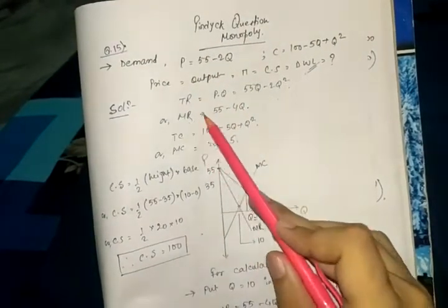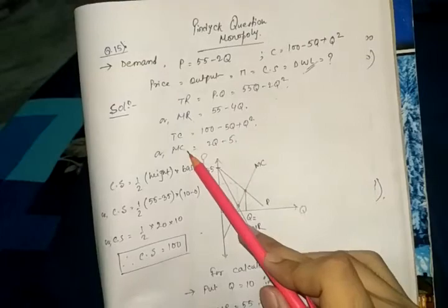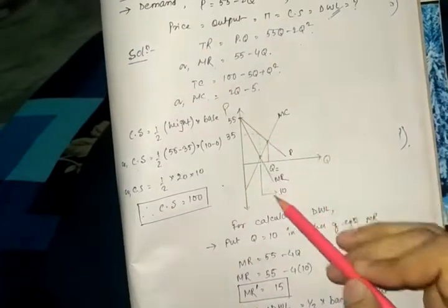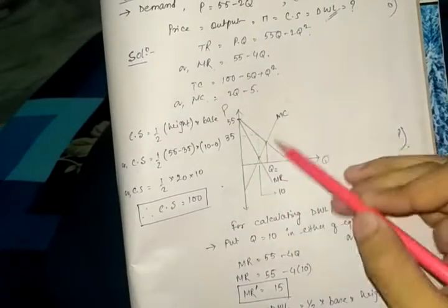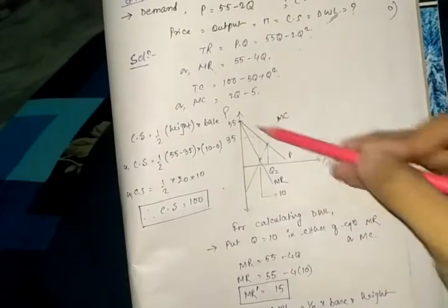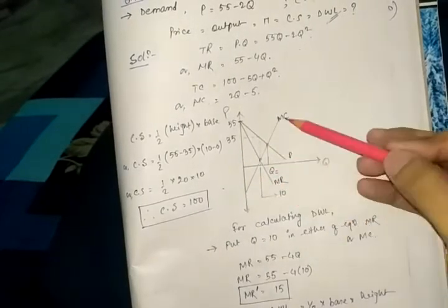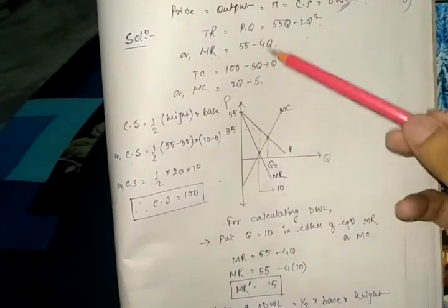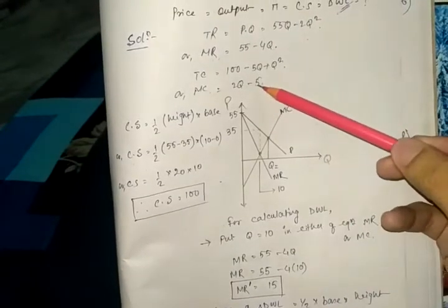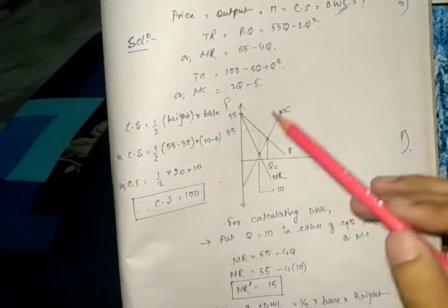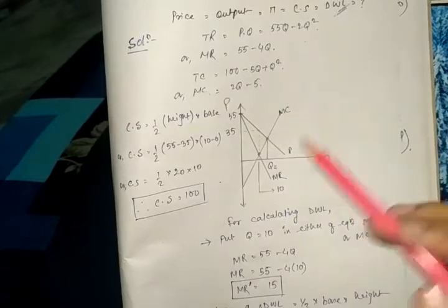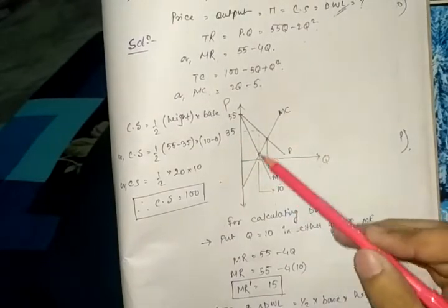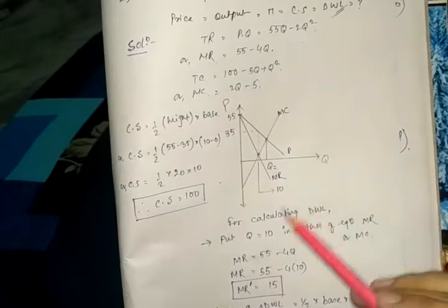First we can find marginal revenue and marginal cost. We will draw graphs of marginal revenue, marginal cost, and demand. After drawing those graphs, we equate marginal revenue with marginal cost to get the profit-maximizing price and quantity, which is price = 35 and quantity = 10.